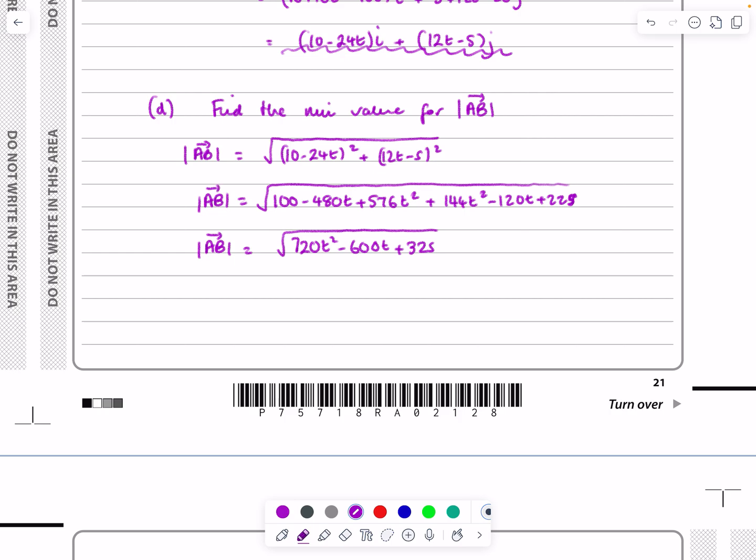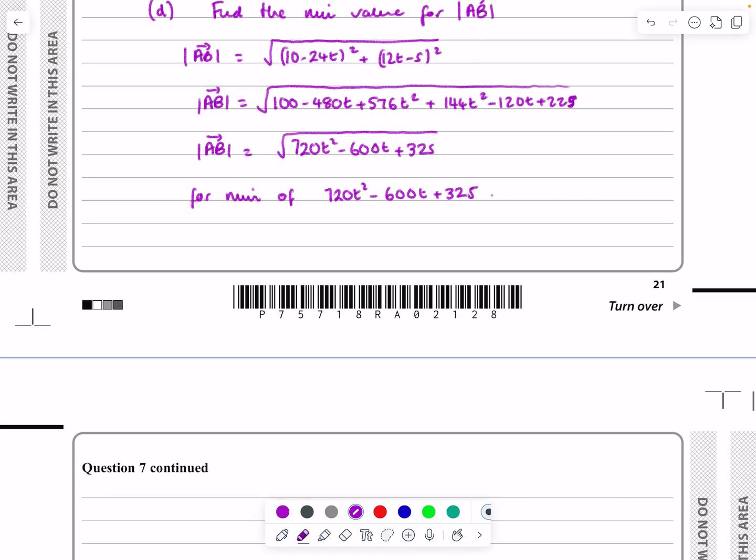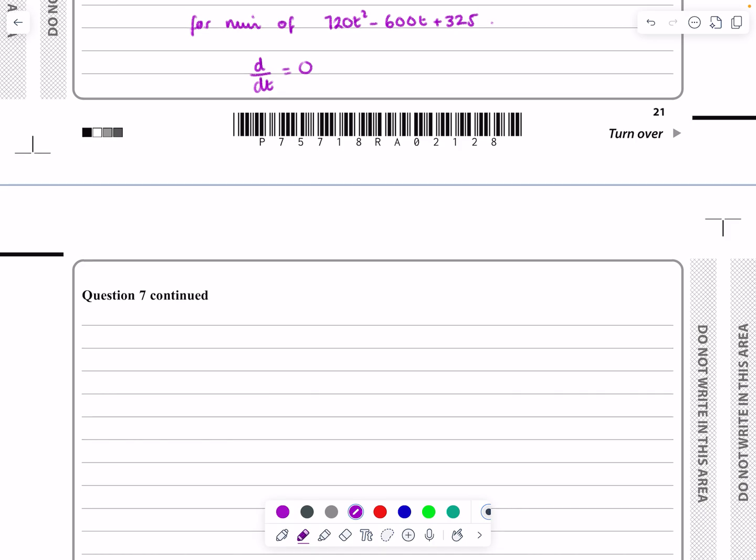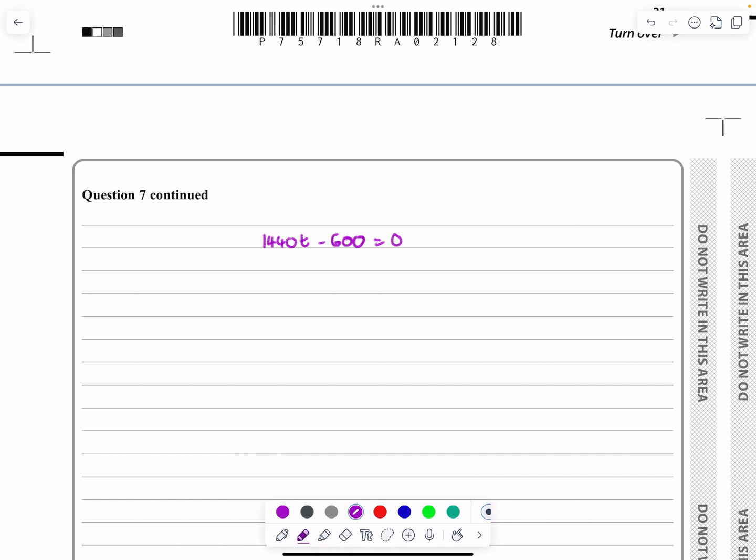If I want the minimum value of that, there's a couple of different ways. You could complete the square. What I'm going to do is find the minimum of 720T² minus 600T plus 325 by differentiation. I tend to stick with this method every time when doing these questions - the differential will be equal to zero. Differentiate to find maximums and minimums. The differential is 1440T minus 600. That works out to be equal to zero. Rearrange all that and T works out to be 5 over 12. I want to plug that back in to find the distance there.